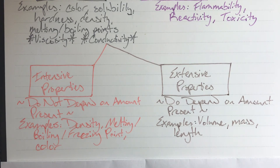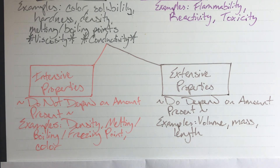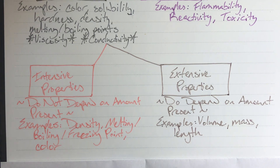Extensive, or external, properties means that the amount present does matter. Some examples of extensive properties are volume — how much space a particular object takes up — mass, how much it weighs, and also length. Those things can be changed about a particular compound just by breaking it up or changing the amount you have. So that covers intensive and extensive properties, and physical and chemical properties.